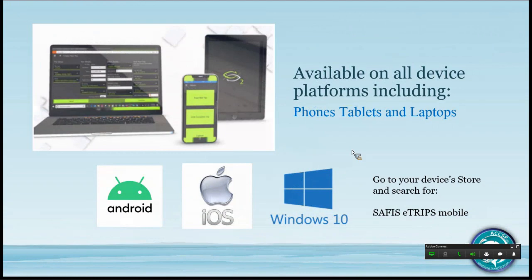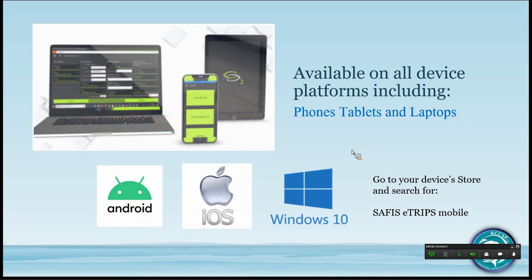One of the most common questions we get is what devices and platforms eTrips 2 is available on. It is available on phones — both Android and iOS — as well as tablets including iPads, iPhones, and Windows 10. If you have a Microsoft Surface or a laptop running Windows 10, it will be available there. They're all available through your device's store. You would search for 'SAFEST eTrips Mobile,' download it, log in, and go through the setup steps.